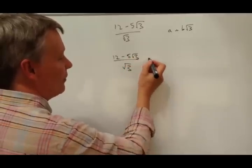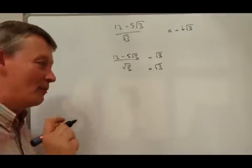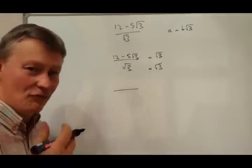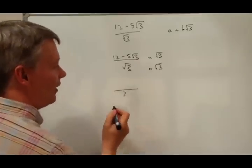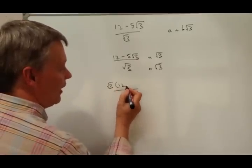If I multiply that by root 3 and that by root 3, at the bottom it's easy. I'm going to get 3 because root 3 times root 3 is root 9, which is 3. And at the top, a little bit more tricky, but I'm going to use brackets because it makes my life easier.